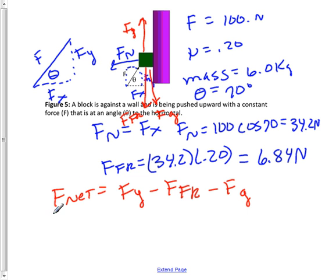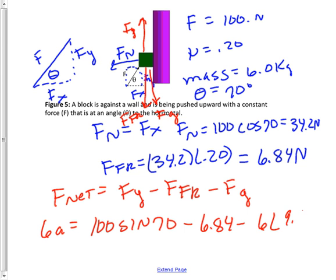So if we're in net force, we always do mass times acceleration. So 6A equals force Y, which would be 100 times the sine of 70, minus the friction force already found above, 6.84, minus the gravity force, which is 6 times 9.8. And our job is to figure out acceleration by dividing the right side by 6. And acceleration is going to be 4.7 meters per second squared.